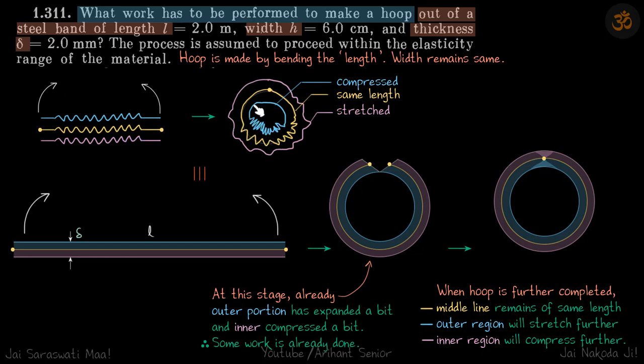So you can imagine that when we are going to turn them around and join them, the inside spring, the blue colored spring, that will be compressed. The medium one will be of same length and the outer one will be stretched. So we have already seen the analogy of a spring and these elastic rods. So that's what is going to happen here also.